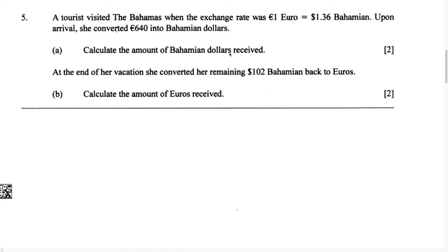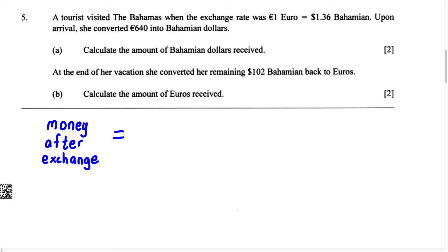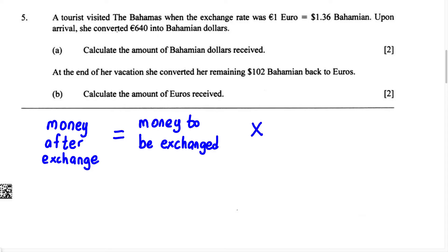So we know we're going to use an exchange rate to convert from euros to Bahamian dollars. Anytime you're dealing with a problem like this and you have the exchange rate, there's an equation you can use. That equation is: money after exchange equals money to be exchanged multiplied by the exchange rate.